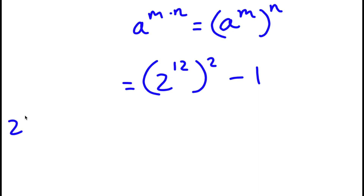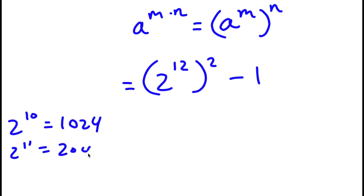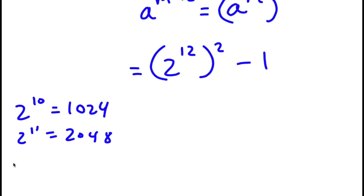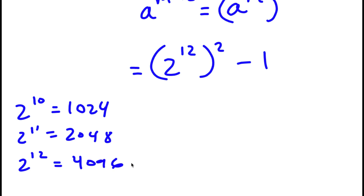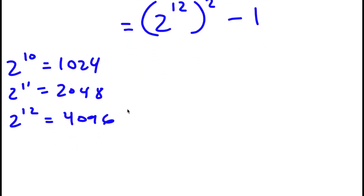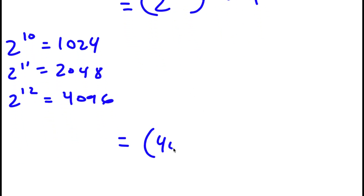Now, we know that 2 to the power of 10 is equal to 1024, so 2 to the 11 is equal to double of 1024, which is 2048. And finally, 2 to the power of 12 is going to equal double of 2048, which is 4096. So now I have 4096 squared minus 1.